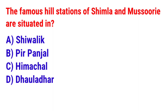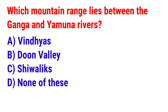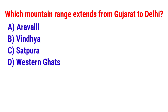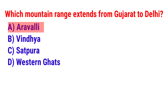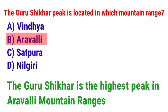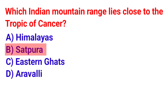Question 18: The famous hill stations of Shimla and Mussoorie are situated in? The answer is option C — Himachal. Question 19: Which mountain range lies between the Ganga and Yamuna rivers? The answer is option C — Shivaliks. Question 20: Which mountain range extends from Gujarat to Delhi? The answer is option A — Aravalli. Question 21: The Guru Shikhar peak is located in which mountain range? The answer is option B — Aravalli. Question 22: Which Indian mountain range lies close to the Tropic of Cancer? The answer is option B — Satpura.